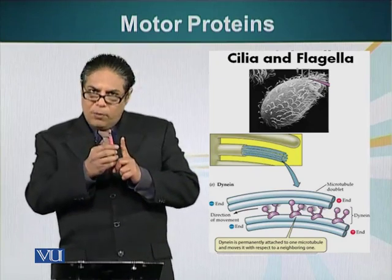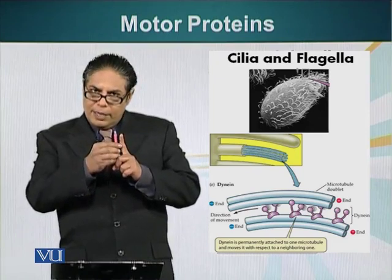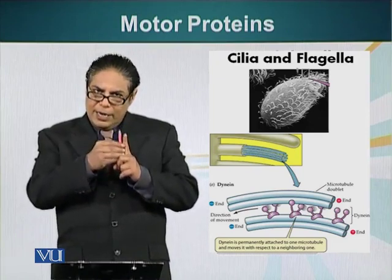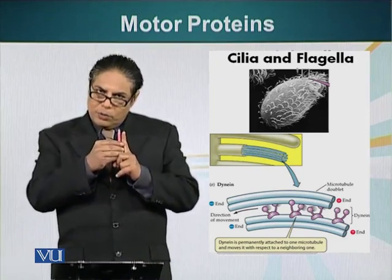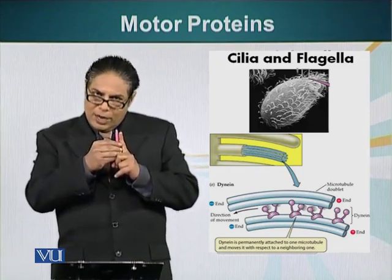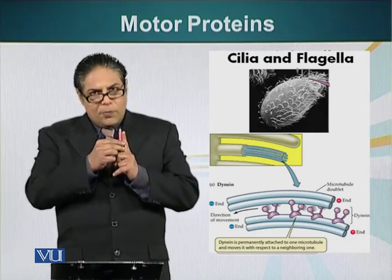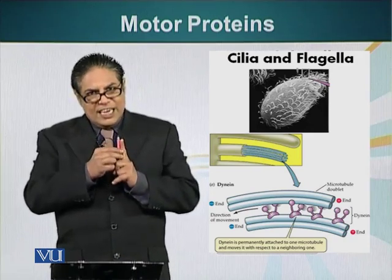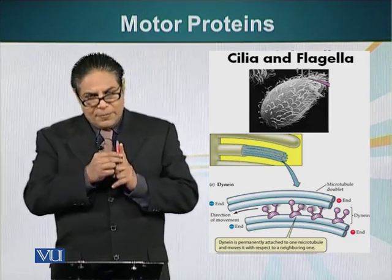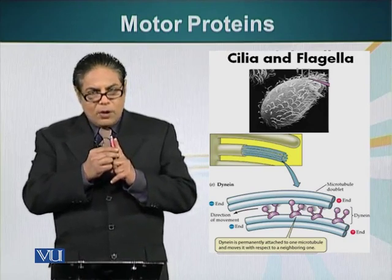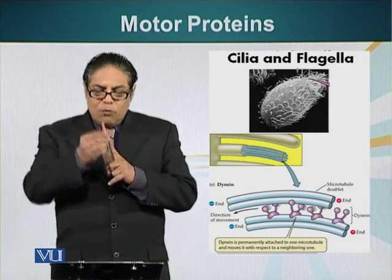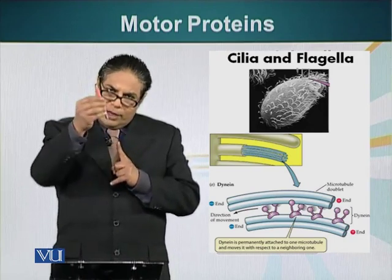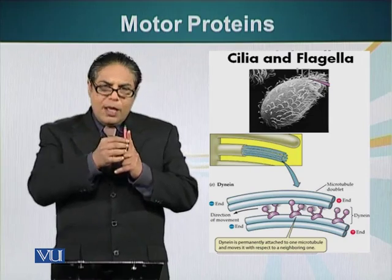When a motor protein is activated — that is, binding to microtubules — it tries to move, but the microtubules in the case of flagella and cilia are fixed. So it cannot move one microtubule along the length of another microtubule.